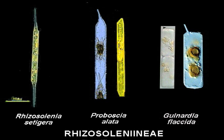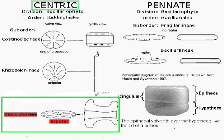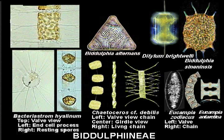The genera of the suborder Biddulphiineae are mainly bipolar. In general, the tests are relatively thick in girdle — that is, lateral view — but they range widely in shape and size. Some are colonial.